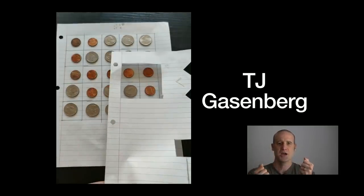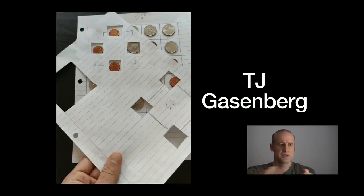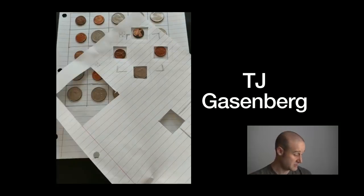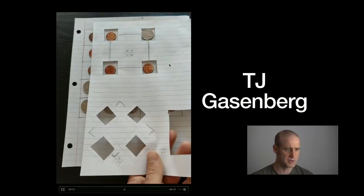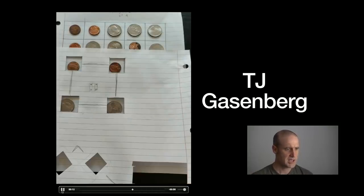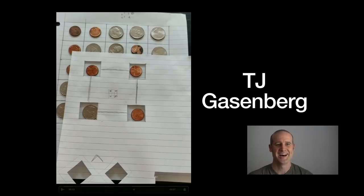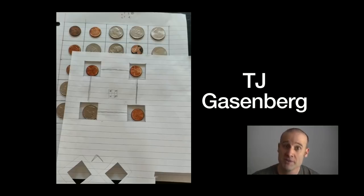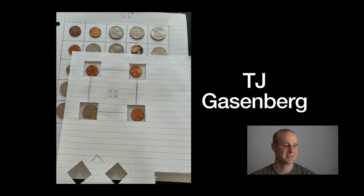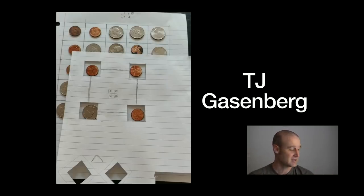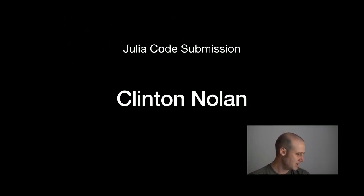Not everyone went digital — we always have some analog solutions. TJ made a series of cutout masks that you could put over the coins to check. You move the mask around and find the squares. TJ sent in a lot of images showing how these cutouts can quickly check for squares — very nice, I like that. Good analog solution.